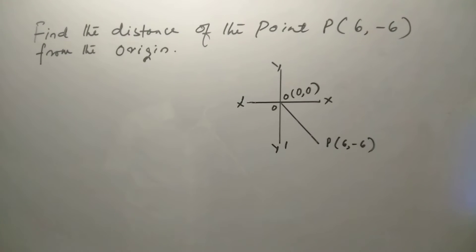Find the distance of the point P (6, -6) from the origin. In this axis, at the 4th quadrant, the point P is (6, -6) and O origin, that is (0, 0).